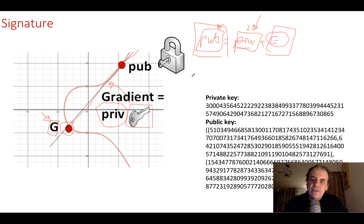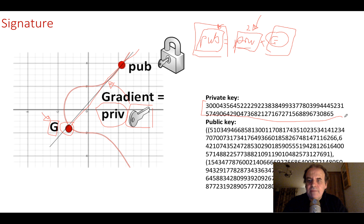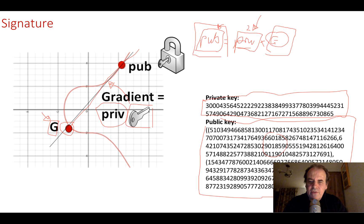With BN256 we actually have two curves drawn, and we end up with a couple of points for our public key — that's one of the main differences. Here's an example of our 256-bit private key, and then we create a public key from it. You'll see that we've got two sets of points, which is different from a normal elliptic curve where we would normally end up with one point. This is the public key.